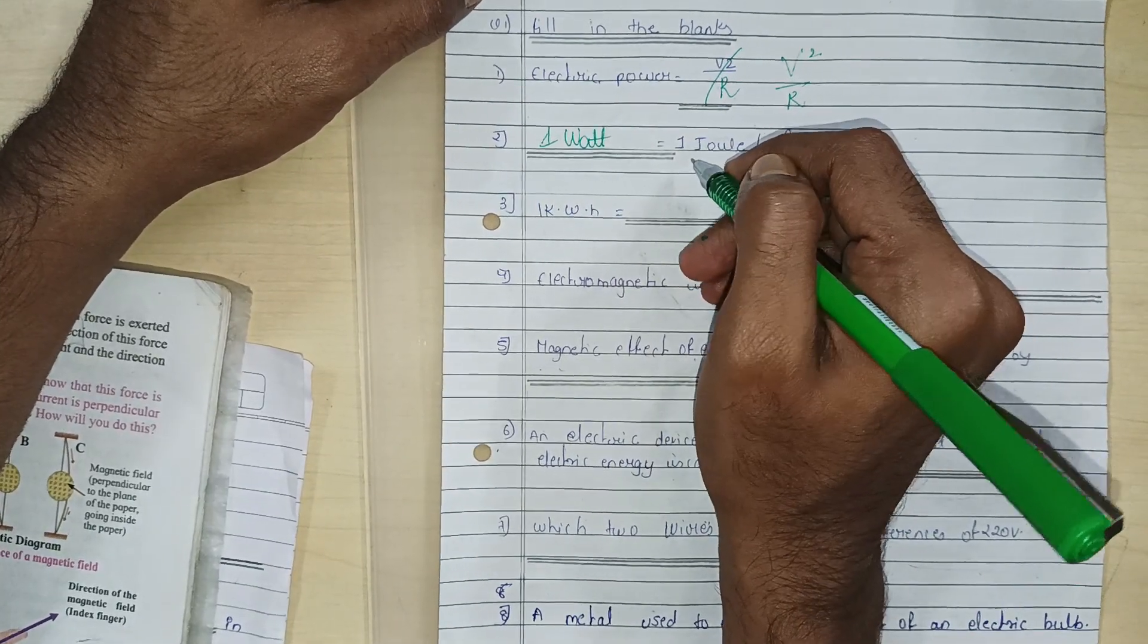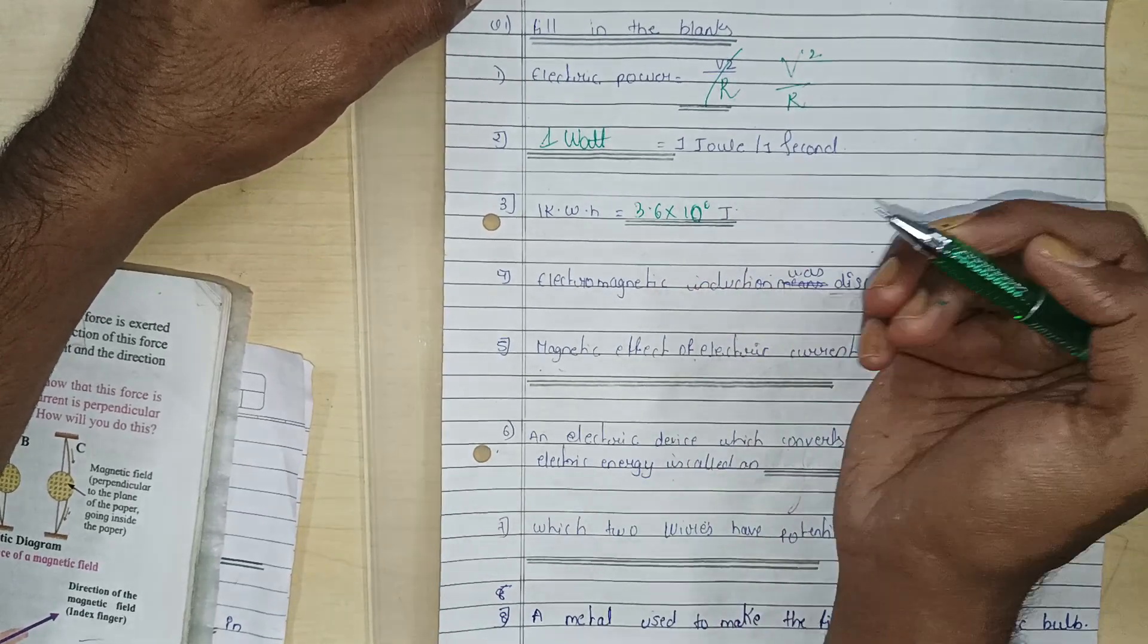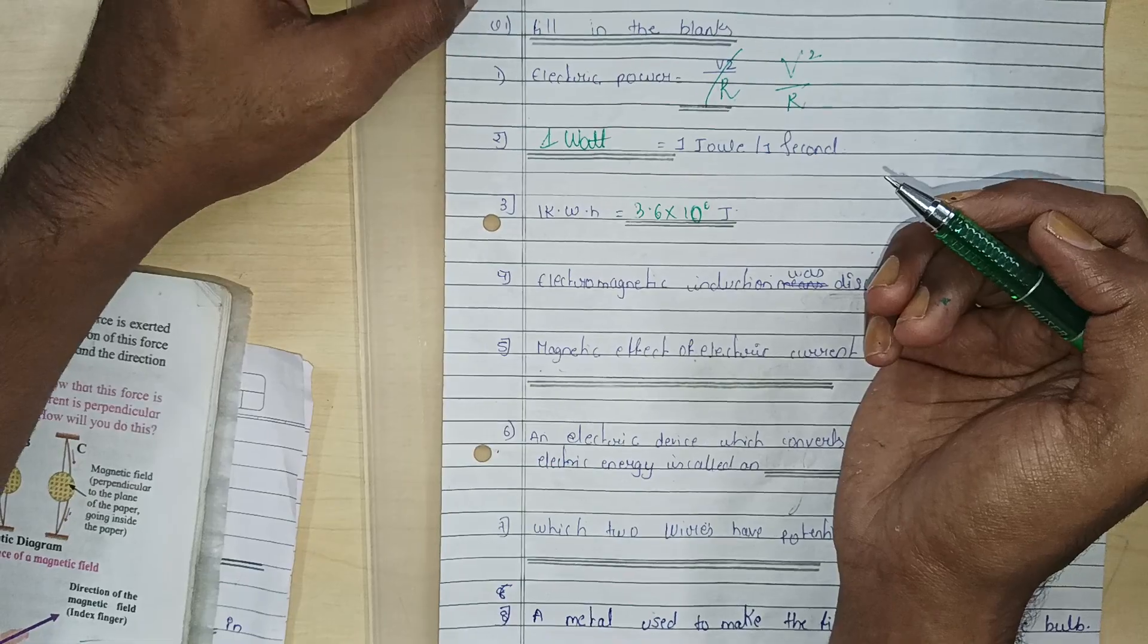What is the answer for next question? 1 kilowatt hour. 1 kilowatt hour is equal to 3.6 into 10 raise to 6 joule.